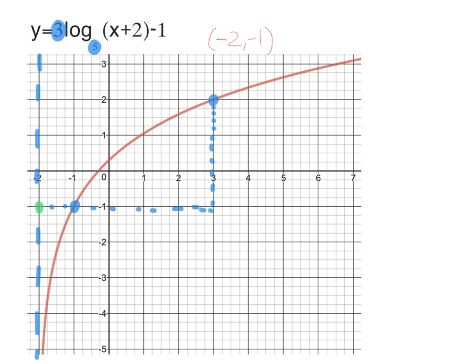Once again, you first find h, k, the opposite of 2, negative 1. Plot the dot, go over 1, go over the base, up a, and put the asymptote through h, k.